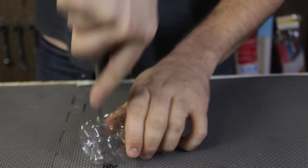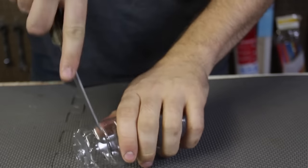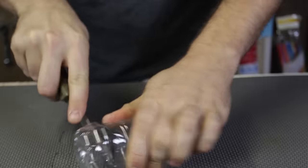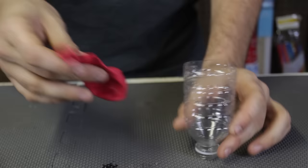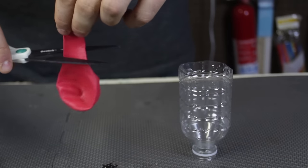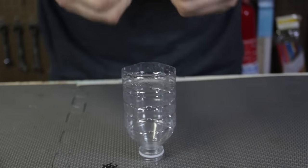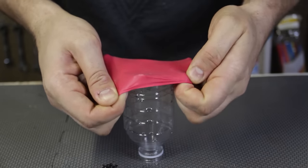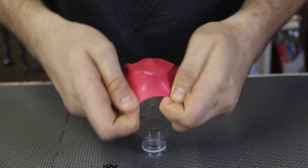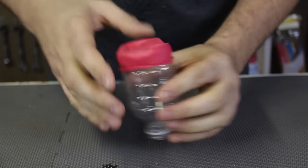So first of all, we're going to grab the bottle and just cut the end of it. Just like that. Then we're going to need a balloon and cut like this. And then simply we're going to grab this balloon and put it over this bottle. Something like that.